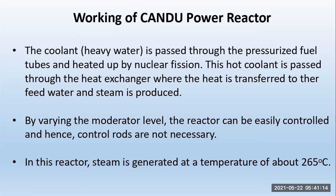Working of the CANDU Power Reactor: the coolant, which is heavy water, is passed through the pressurized fuel tubes and heated up by the nuclear fission. This hot coolant is then passed through the heat exchanger, where the heat is transferred to the feed water and steam is produced.